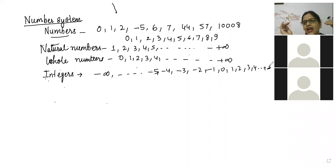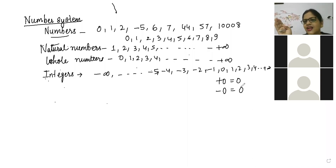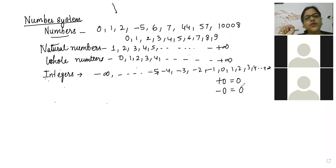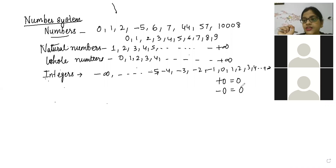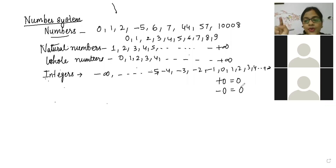Zero is a digit, and in front of zero, plus and minus are operations. The first key word today is operation. Plus is an operation, minus is an operation, multiplication is an operation, division is an operation. These operations try to change a number.